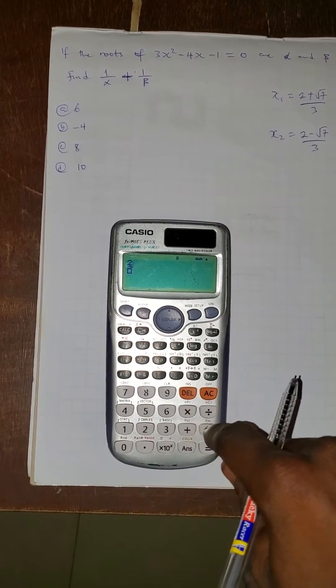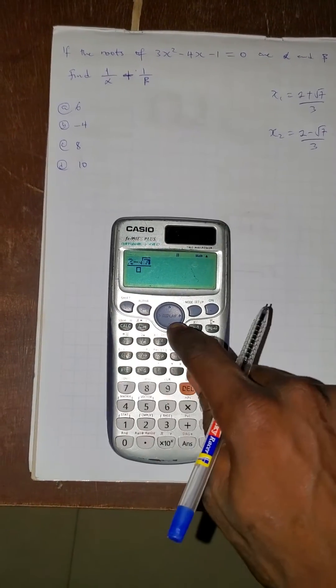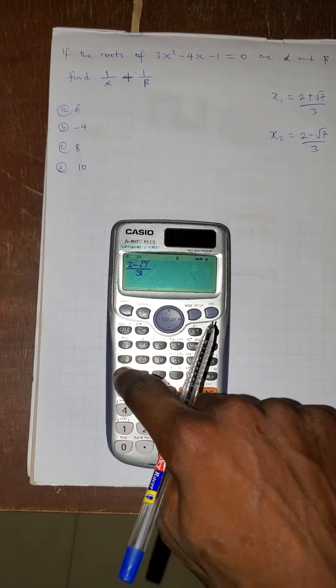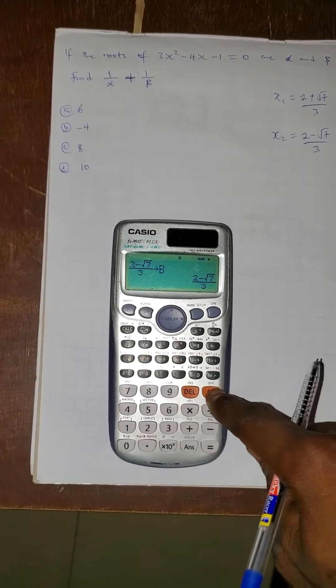Press the second one, 2 minus root 7 over 3. Then press shift RCL and press the button of B. Now we've saved this.